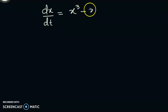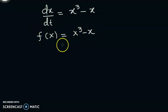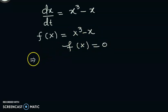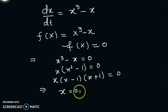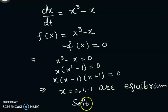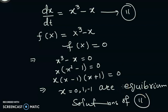For example, consider the differential equation dx/dt = x³ - x. What are the equilibrium solutions? Here f(x) = x³ - x, so we set f(x) = 0, giving x³ - x = 0, which factors as x(x - 1)(x + 1) = 0. That means x = 0, 1, and -1 are the equilibrium solutions of this equation. We can find equilibrium solutions by setting the time derivative to zero.